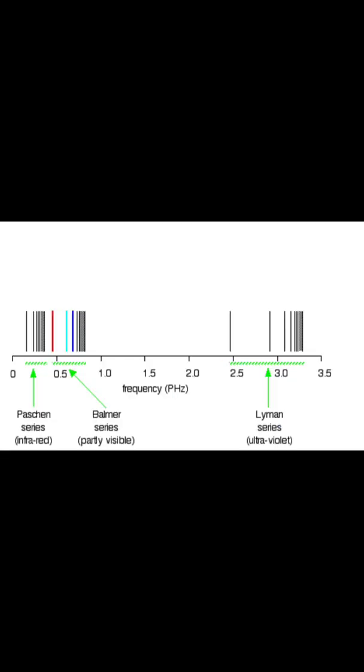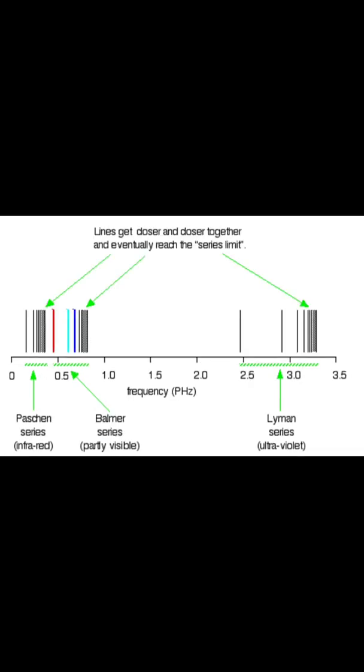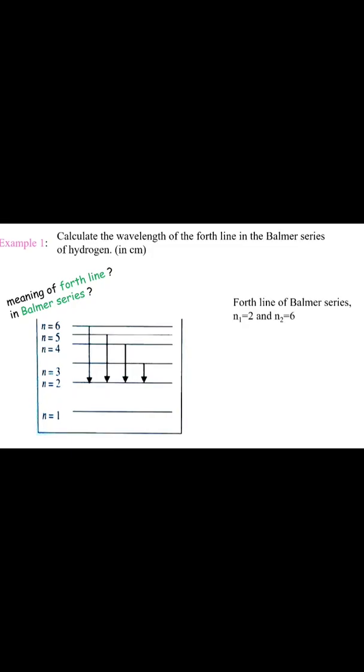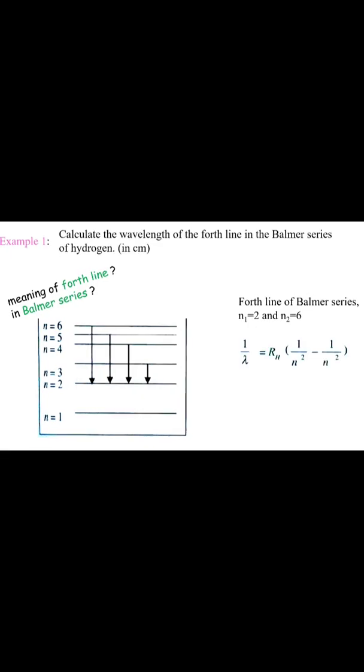In the Balmer series or Paschen series, the same pattern applies but the series are more compact. For Example 1: calculate the wavelength of the fourth line in the Balmer series of hydrogen. The fourth line of the Balmer series means N1 = 2 and N2 = 6. Using the Rydberg formula, the wavelength works out to 4.1 × 10⁻⁵ cm.